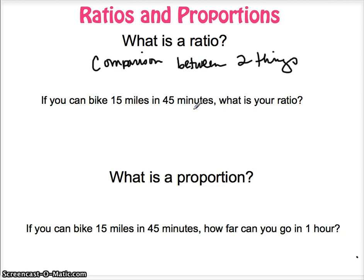Okay, for example, if you can bike 15 miles in 45 minutes, what is your ratio? That would be 15 miles in 45 minutes. You can write it as 15 over 45, which is the most common way we will write it.